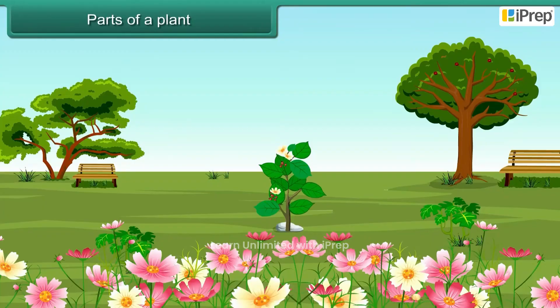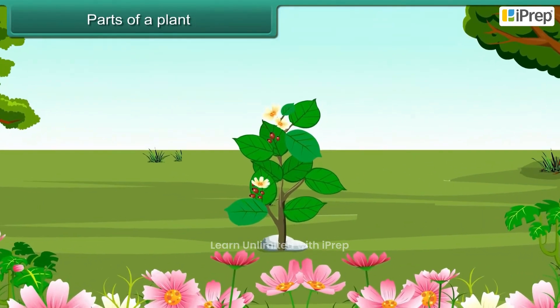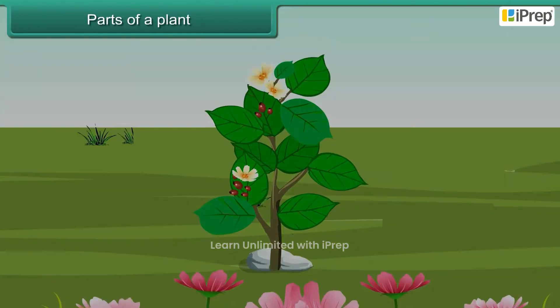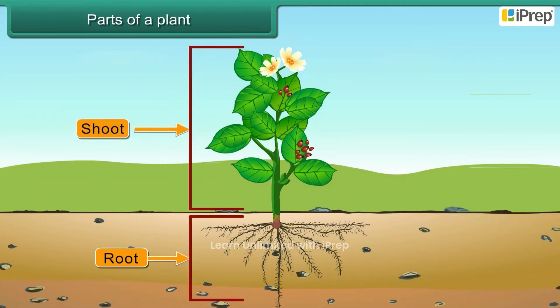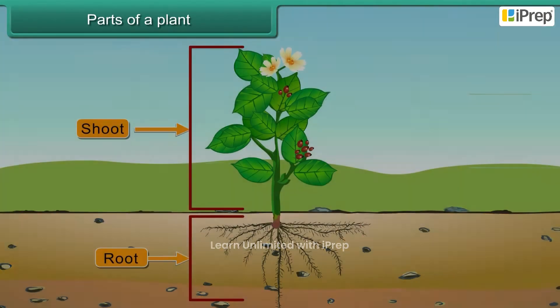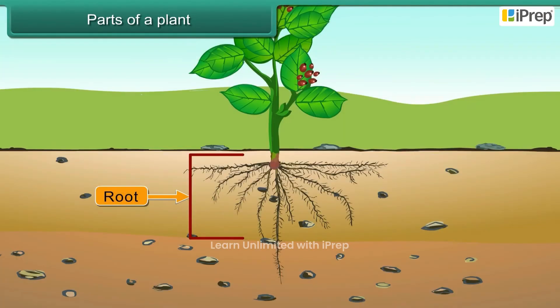A plant's body is divided into two parts: root and shoot. Roots grow under the soil.